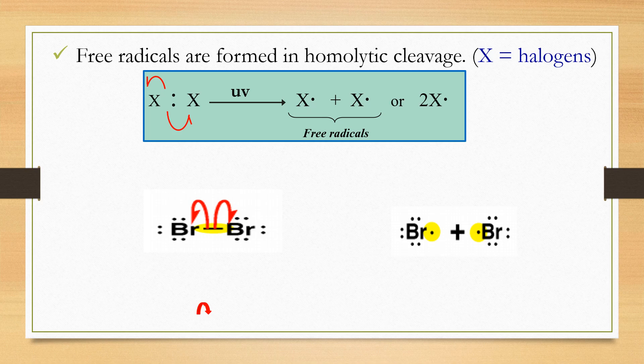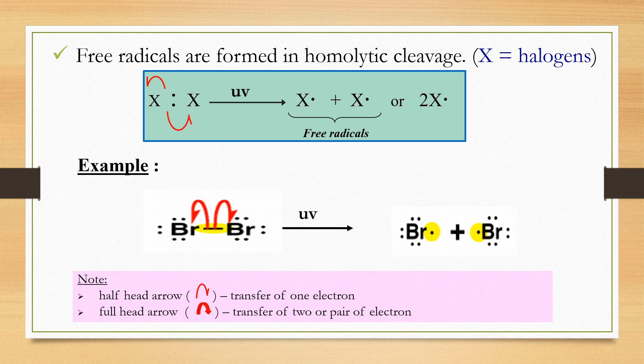The distribution of bonding electrons in homolytic cleavage is shown by the half-headed arrow. Radicals are species with one unpaired electron. Note that the half-headed arrow means only one electron is transferred, while the full-headed arrow means the transfer of two electrons, or a pair of electrons.